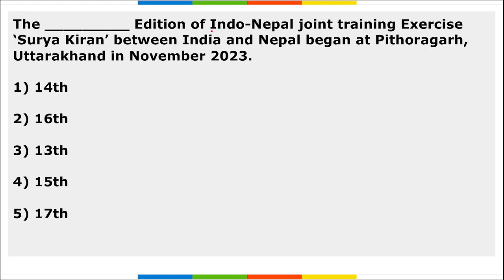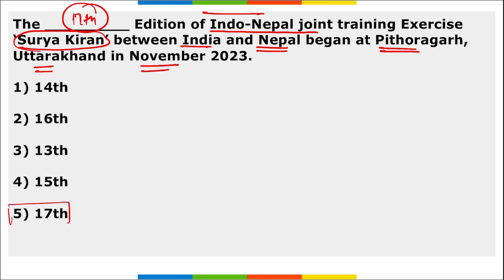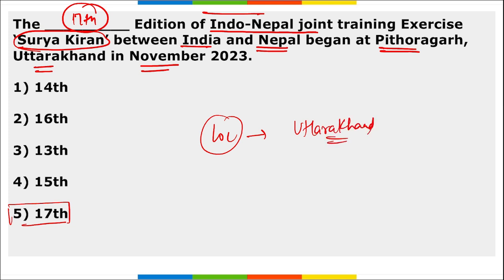Next: which edition of the Indo-Nepal joint training exercise Surya Kiran was held in Pithoragarh, Uttarakhand in November? This was the 17th edition of the Indo-Nepal joint training exercise Surya Kiran between India and Nepal, held in Pithoragarh, Uttarakhand. The 16th edition was held in Nepal, since it is an exercise between India and Nepal alternating locations.